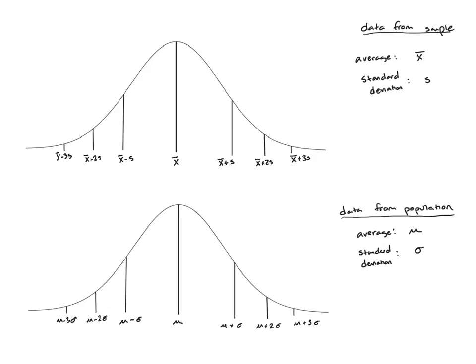If the data from our sample is normally distributed, then we can say our sample is approximately normal with an average of x-bar and a standard deviation of s. If our population is normally distributed, we can say it's approximately normal with an average of mu and a standard deviation of sigma.